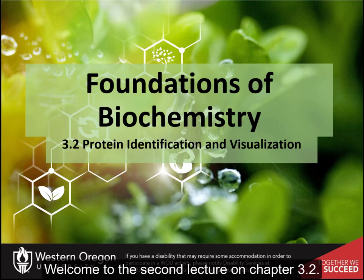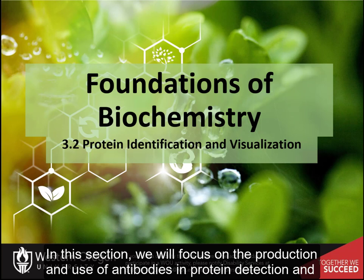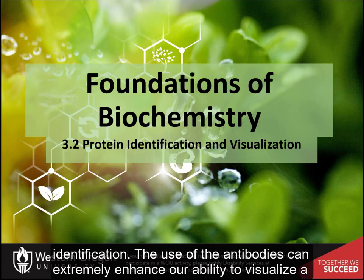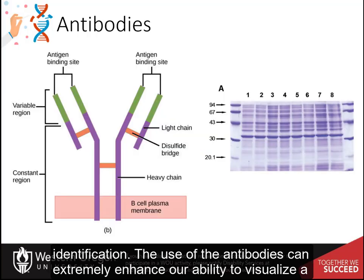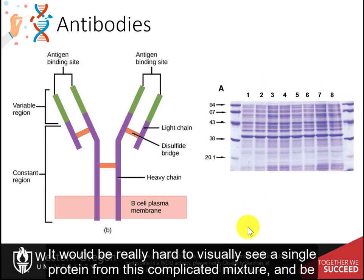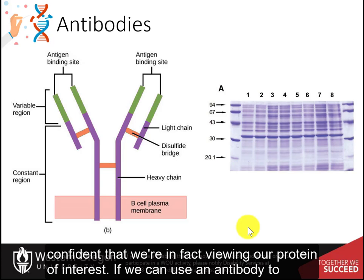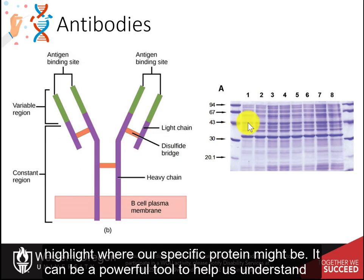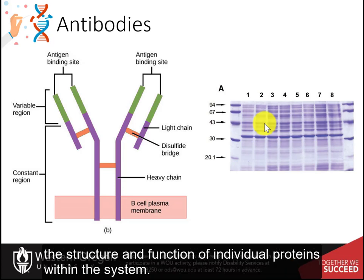Welcome to the second lecture on Chapter 3.2. In this section, we will focus on the production and use of antibodies in protein detection and identification. The use of antibodies can extremely enhance our abilities to visualize a single protein within a mixture. Think about our SDS-PAGE gel — it would be really hard to visually see a single protein from a complicated mixture. If we can use an antibody to highlight where our specific protein might be, it can be a powerful tool to help us understand the structure and function of individual proteins within a system.